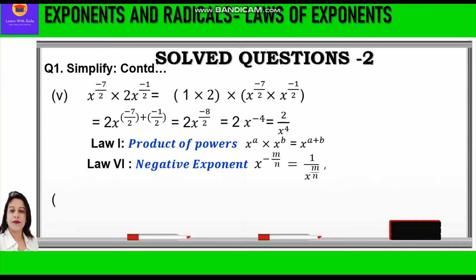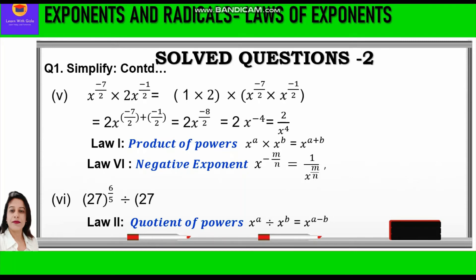Question 6: 27 raised to power 6 by 5 divided by 27 raised to power 1 by 5. We apply law 2, quotient of powers: whenever two exponents are divided, we subtract the powers. So we write 27 raised to power 6 by 5 minus 1 by 5, equal to 27 raised to power 5 by 5, equal to 27 raised to power 1, equal to 27.